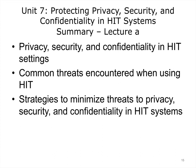This concludes Lecture A of Unit 7, Protecting Privacy, Security, and Confidentiality in HIT Systems. In summary, in this unit we have explored what privacy, security, and confidentiality mean in relation to HIT systems, examined a range of security safeguards that can be employed to protect the confidentiality of health information, and learned about common threats to data in these systems. We have examined the HIPAA Privacy Rule as well as the Security Rule in some depth, starting with administrative safeguards. In the second half of Unit 7, we'll finish our look at the HIPAA Security Rule by discussing physical and technical safeguards, as well as formal risk analysis and management processes.